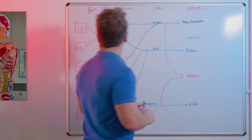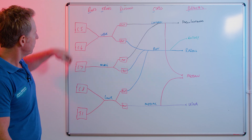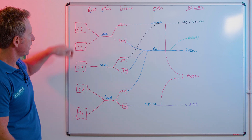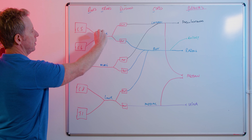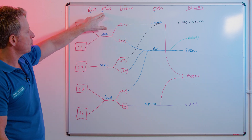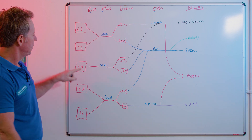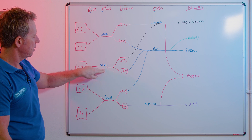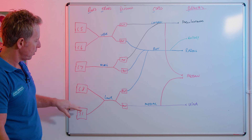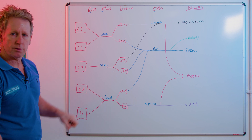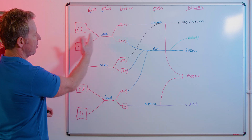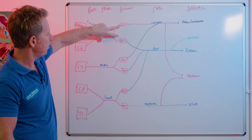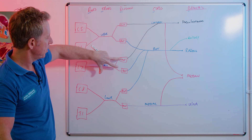Looking at the roots, we've got five nerve roots: C5 and C6 conjoin to form the upper trunk, C7 forms the middle trunk, and C8 and T1 conjoin to form the lower trunk. So five become three, and then it splits to six — we have an anterior and posterior division of each.